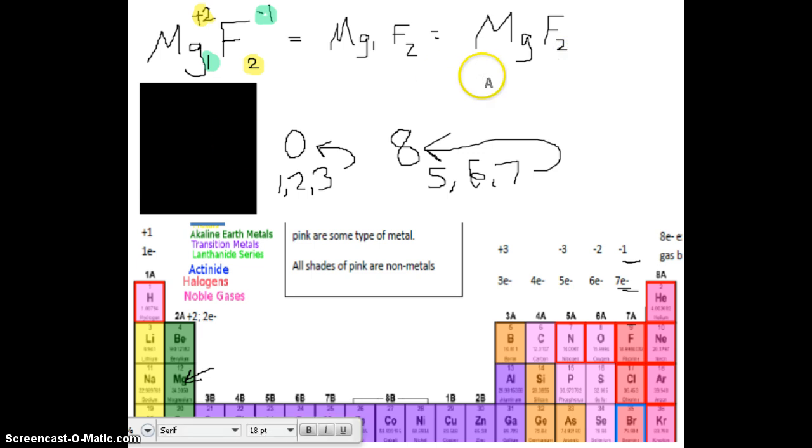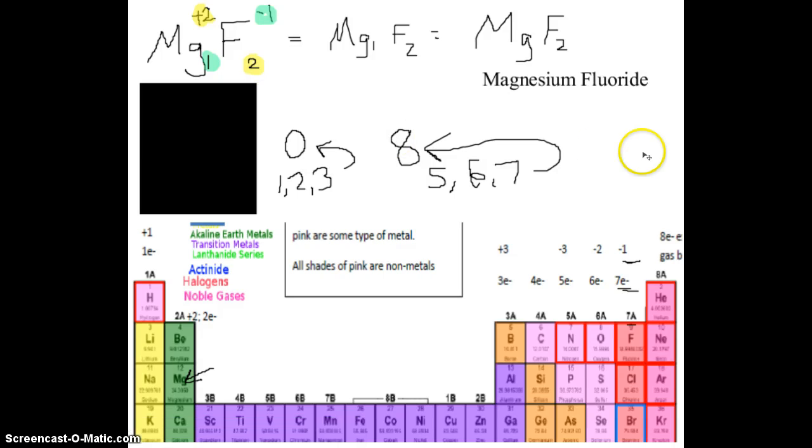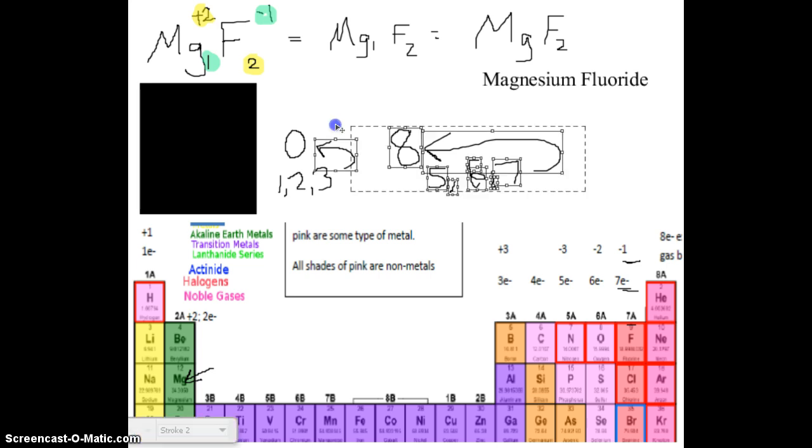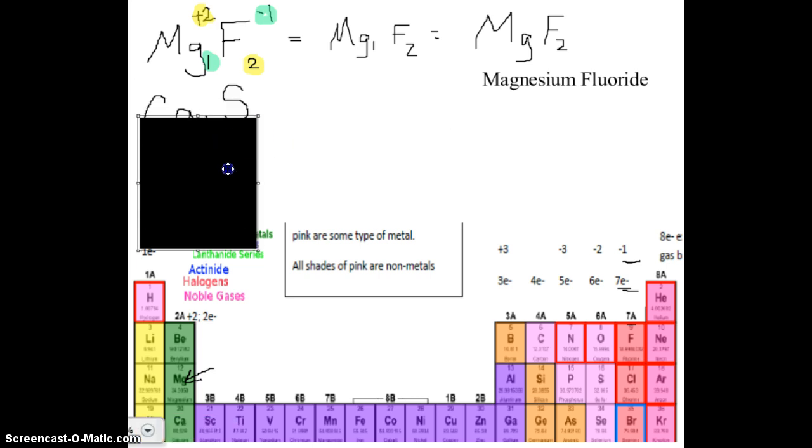Now let's do the naming. Mg is what element? It is magnesium. F is what element? It is fluorine. However, what do we need to do? We need to change the ending to be I-D-E. So it's magnesium fluoride. And that's it. We wrote the first name, magnesium. We wrote the second name and changed the ending to I-D-E, or -ide.